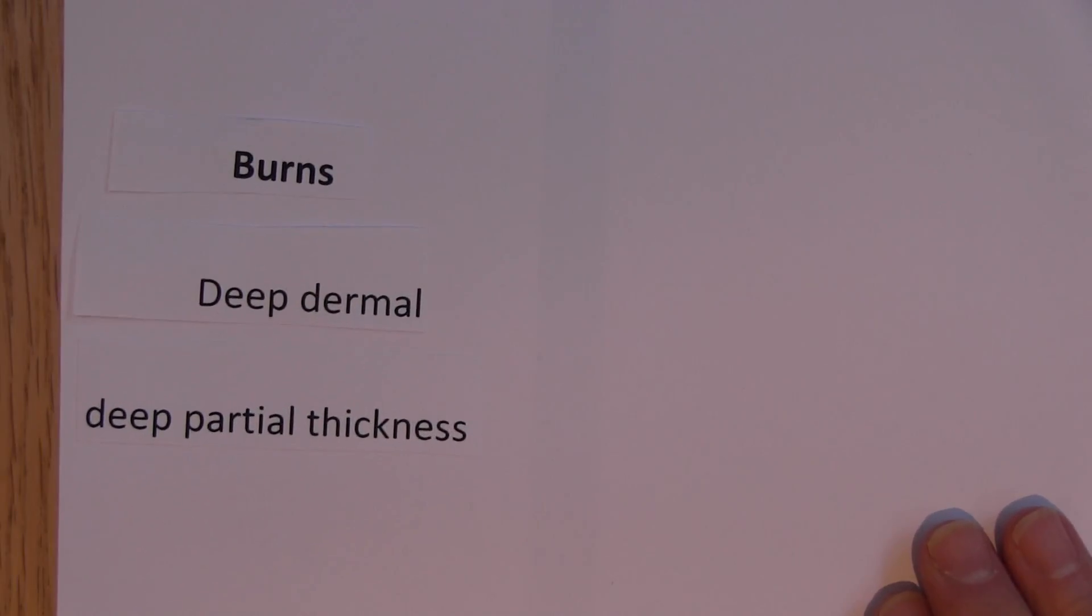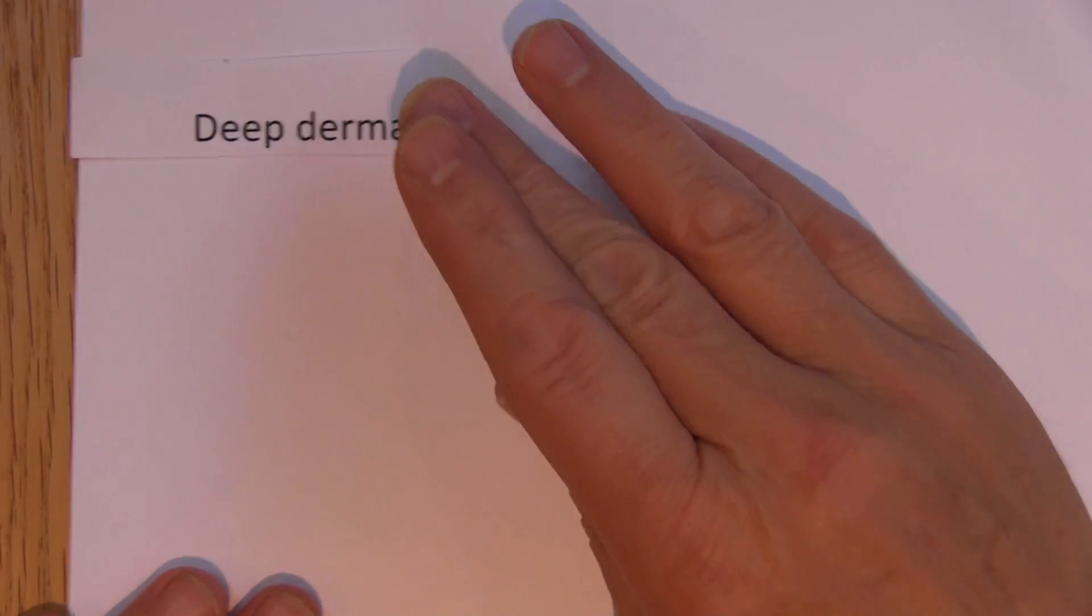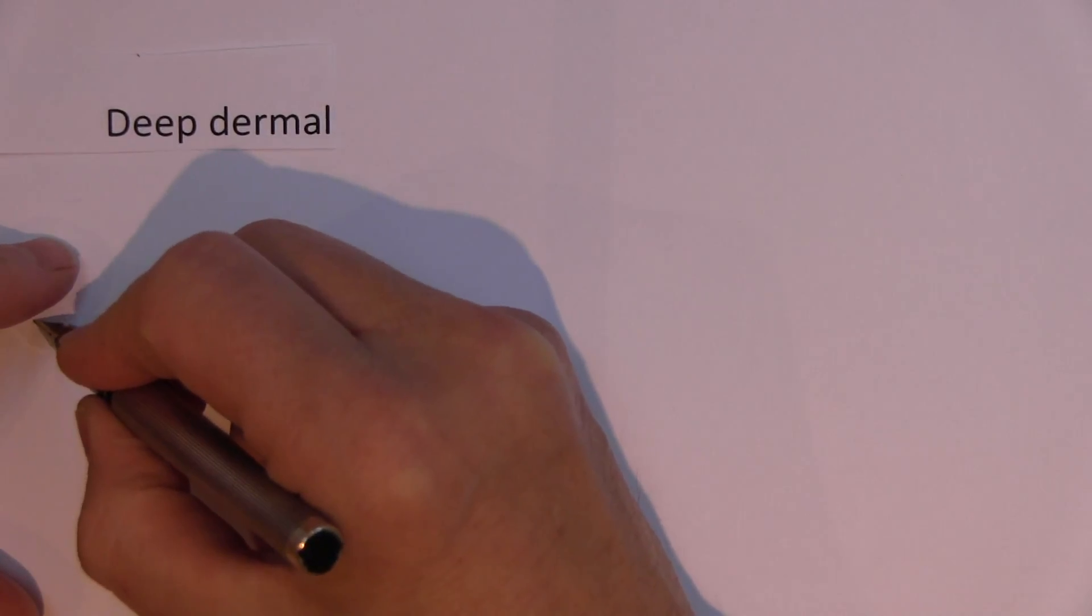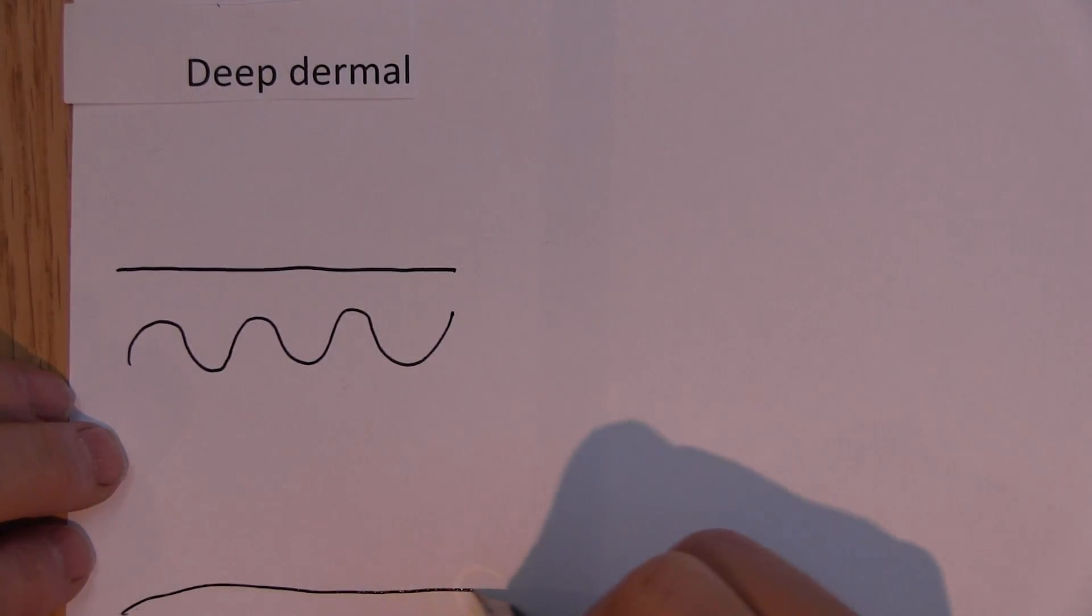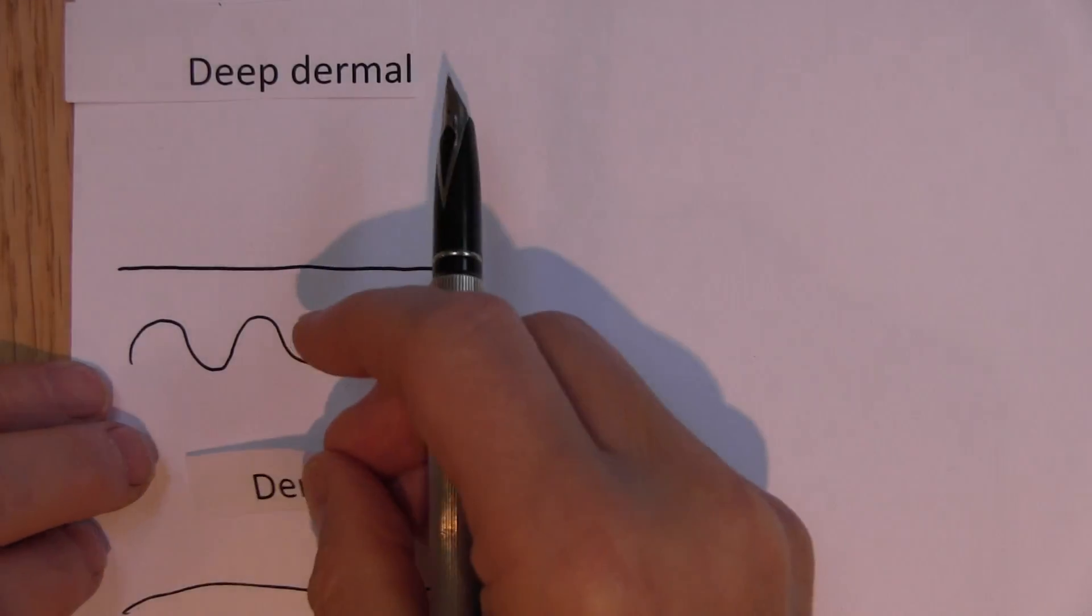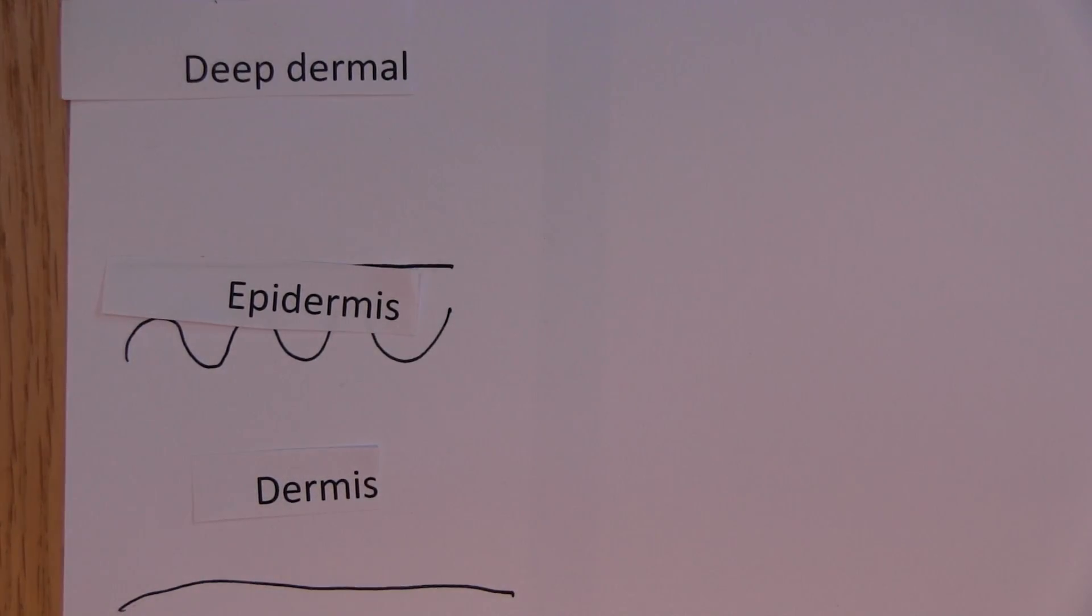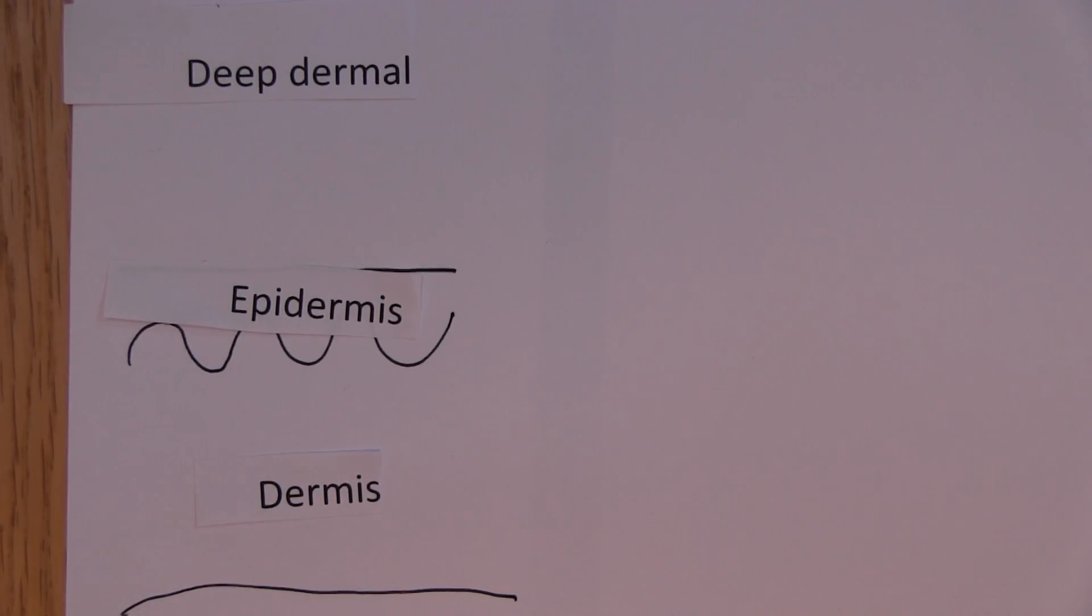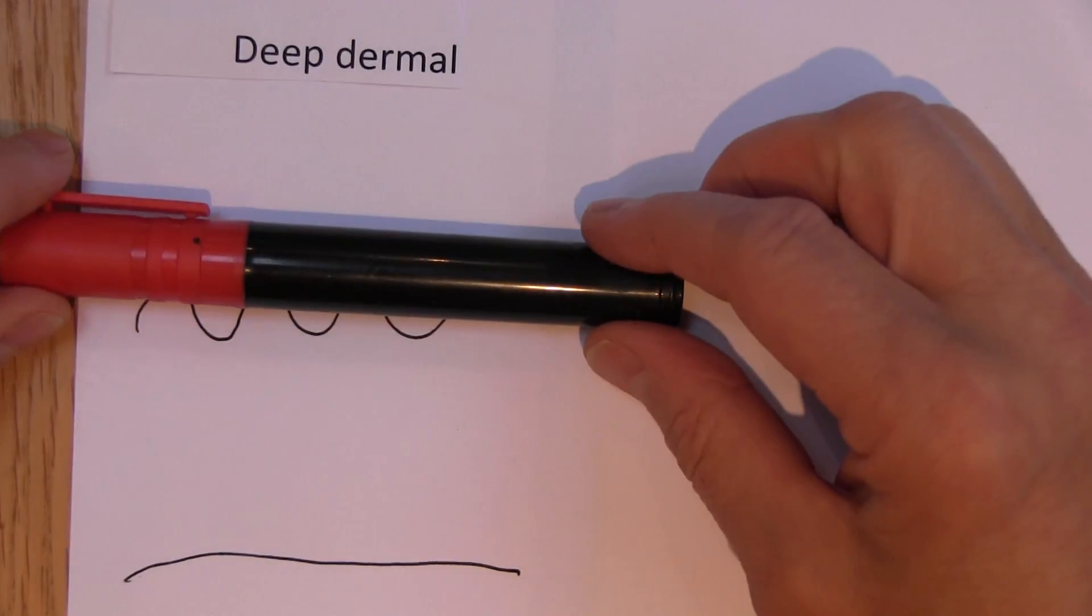Deep dermal, they're still partial thickness but they're deep partial thickness burns. Now to orientate ourselves as usual for these deep dermal partial thickness burns, we need to think about the skin. So here we have the surface of the skin, the epidermis, and the dermis below. Dermis, epidermis, I'm sure you get the hang of this by now.